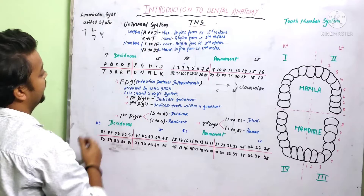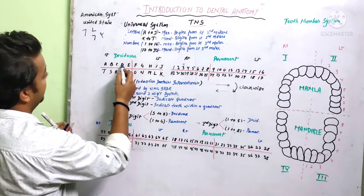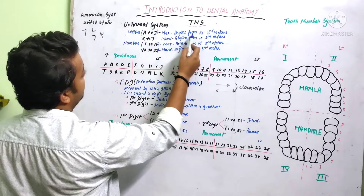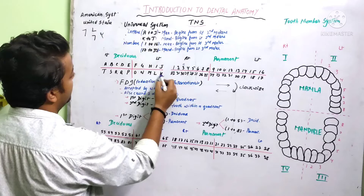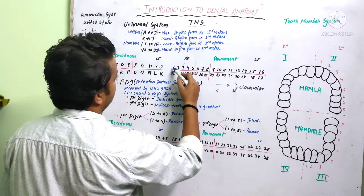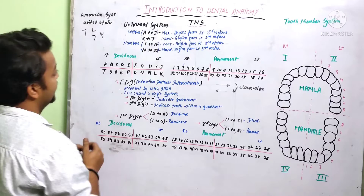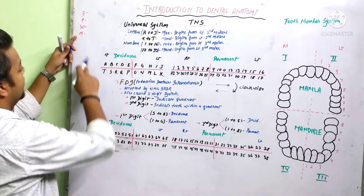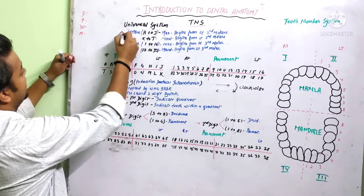In the Universal system, letters go from A to J and K to T for deciduous, and numbers from 1 to 16 and 17 to 32 for permanent. The numbering goes in a clockwise direction starting from the maxillary right. In deciduous, it starts from the maxillary right second molar, and K becomes the mandibular left second molar. For permanent, it starts from the right third molar and goes to the left third molar.